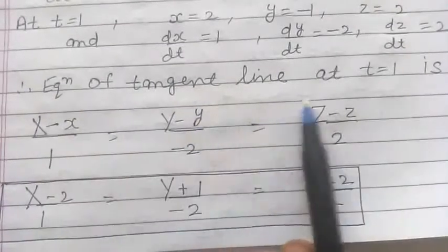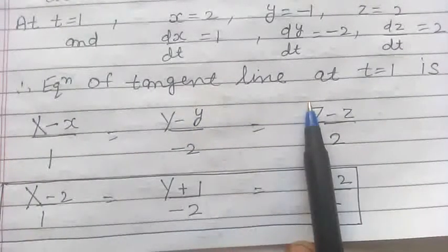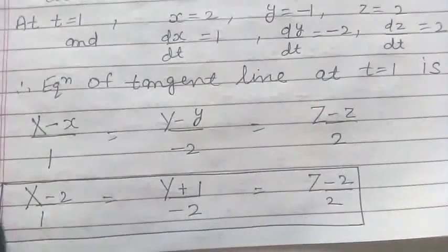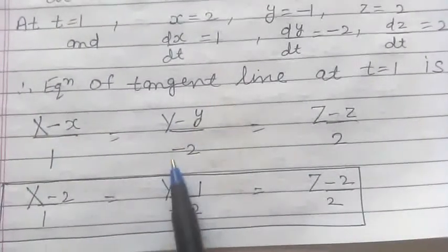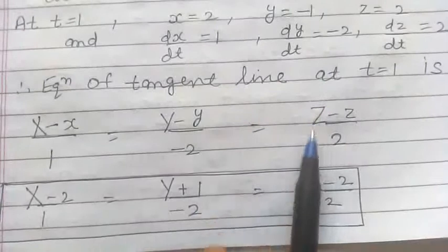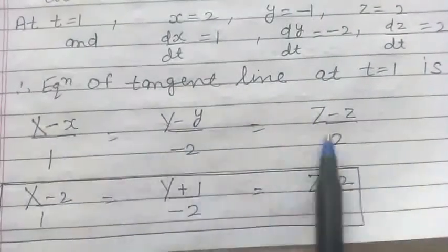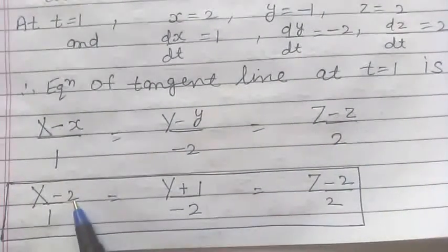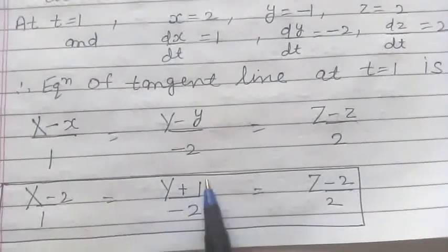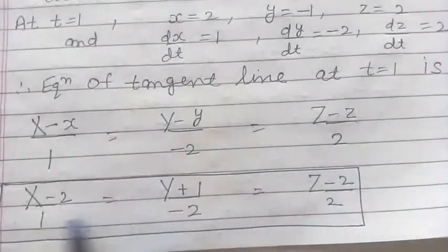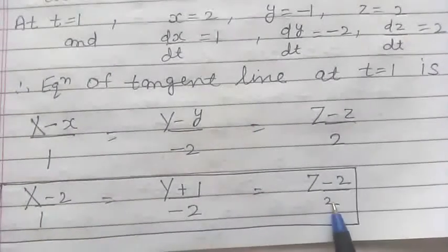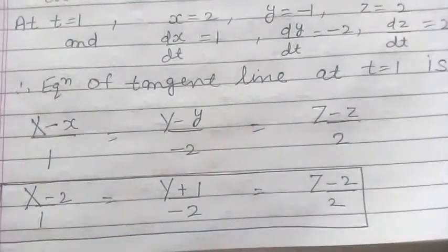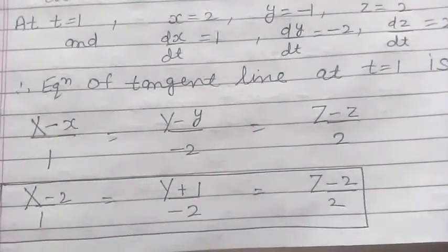Substituting all values into the equation of the tangent line — (X − x)/x-dot = (Y − y)/y-dot = (Z − z)/z-dot — with x = 2, y = −1, z = 2 and x-dot = 1, y-dot = −2, z-dot = 2, we get the required equation of the tangent line.